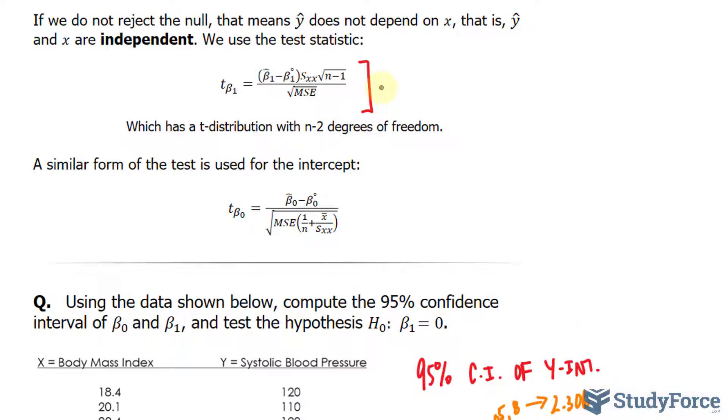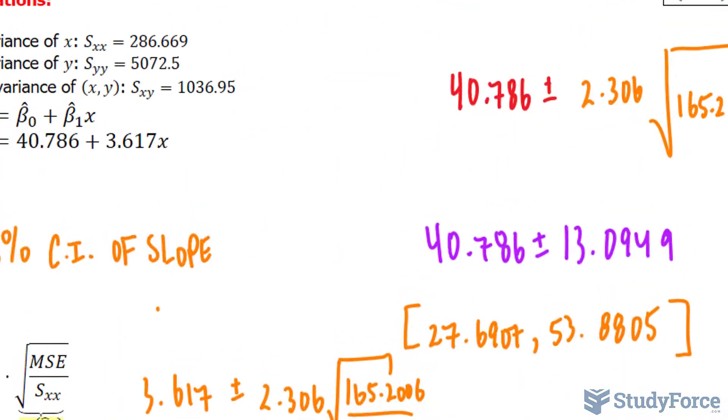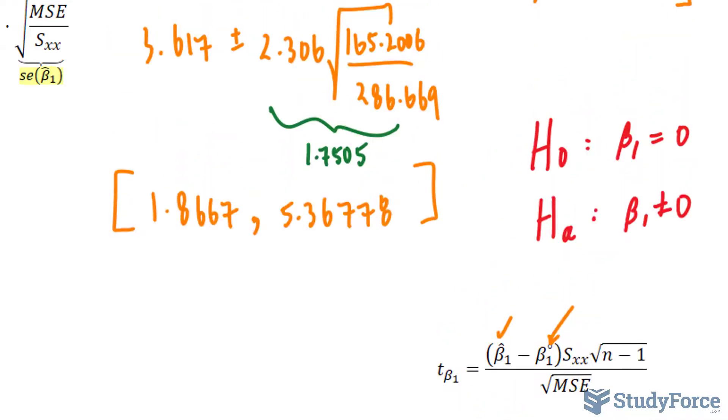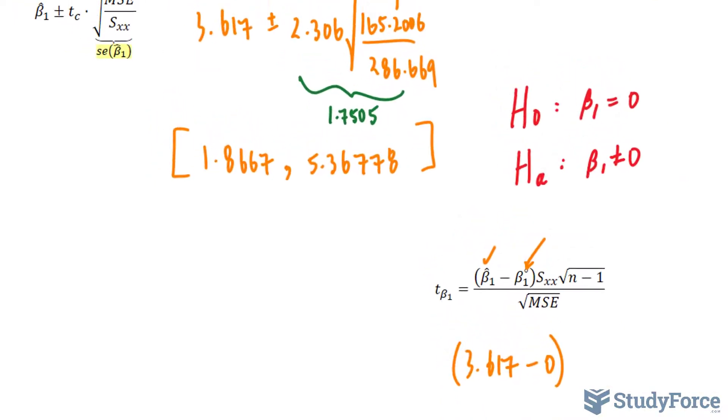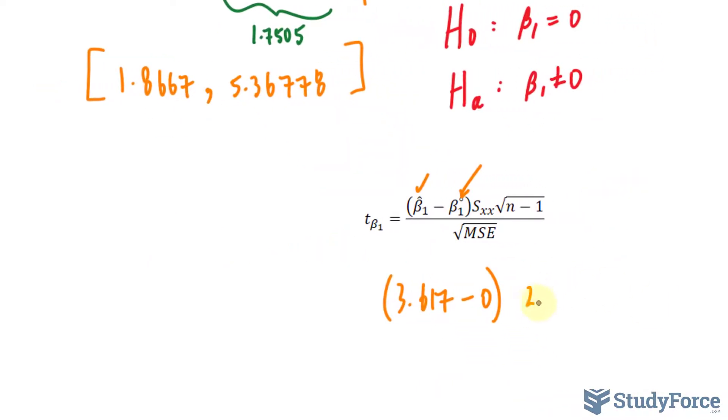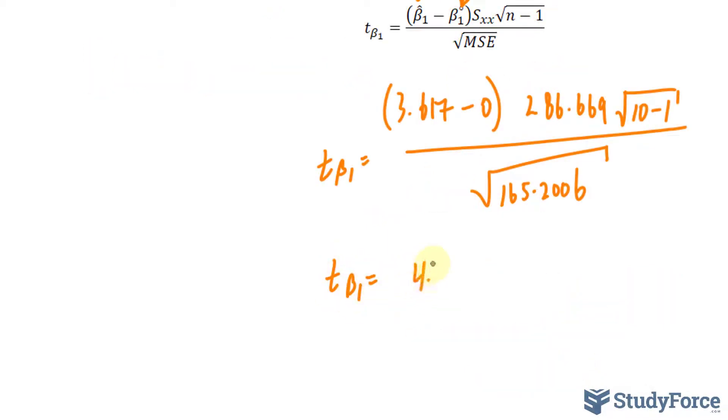Let's use this formula to help us calculate t observed. We have our slope which is 3.617, minus this value here which tells us what we wanted to test and that's zero. So that number minus zero. The variance of the x's is 286.669, and that's multiplied to 10 minus 1, which is 9, divided by the square root of the mean square error, 165.2006. Calculating this, you should get 4.76499.